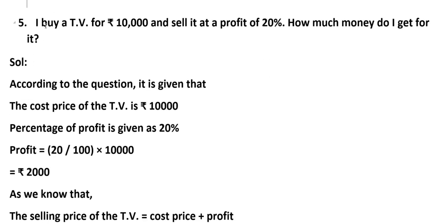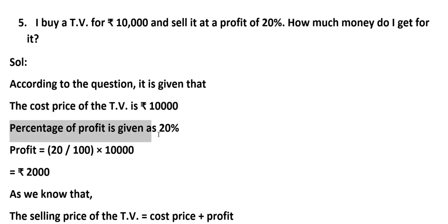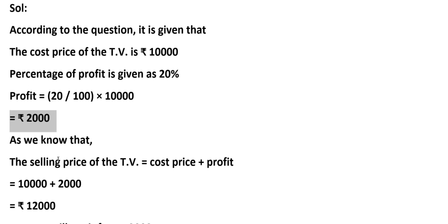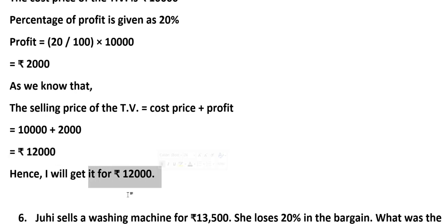Fifth problem: I buy a TV for Rs. 10,000 and sell it at a profit of 20%. How much money do I get for it? Solution: Cost of TV = Rs. 10,000. Profit percentage = 20%. Profit = (20÷100) × 10,000 = Rs. 2,000. Selling Price = Cost Price + Profit = Rs. 10,000 + Rs. 2,000 = Rs. 12,000. So I get Rs. 12,000 for the TV.